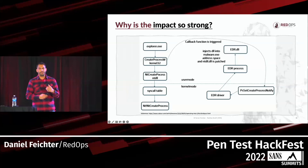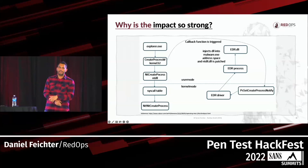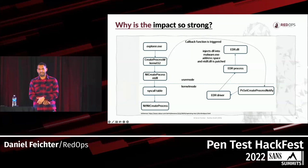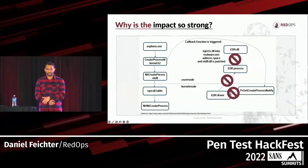Why is the impact so strong? In my opinion, the interplay between userspace API hooking and callbacks is no longer existent after disabling the minifilter, and based on that, prevention and detection capabilities are mostly disabled.